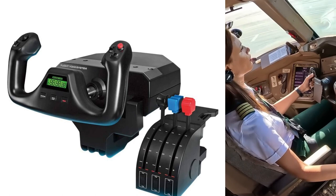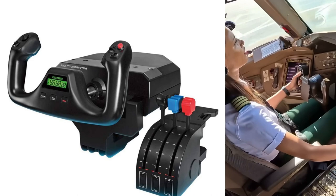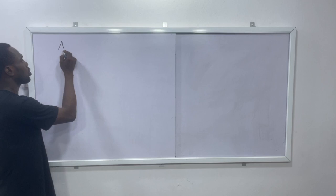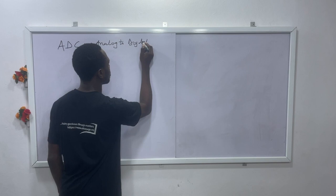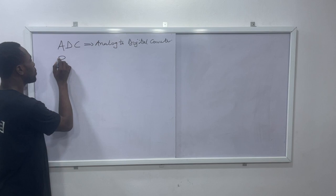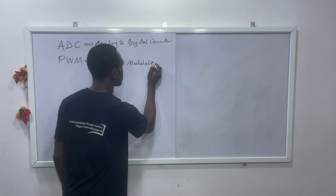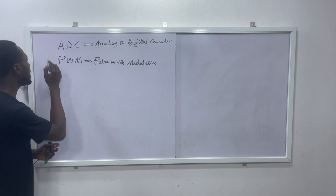Now let's get into the theoretical aspects of these particular concepts. ADC actually means analog to digital conversion. PWM basically means pulse-width modulation. A detailed note on these two concepts is actually on the ElitePage platform — download the app to get a comprehensive knowledge of this.